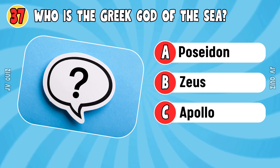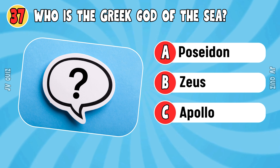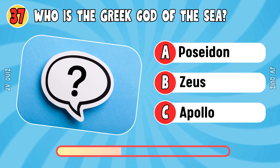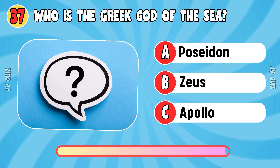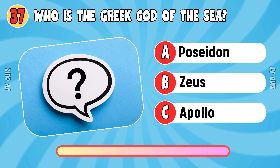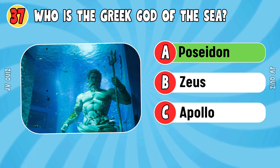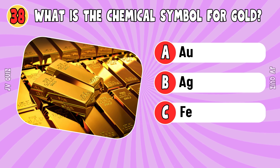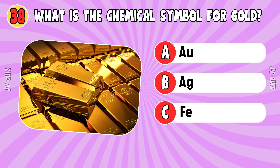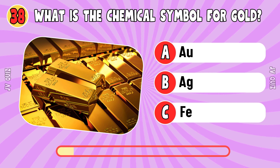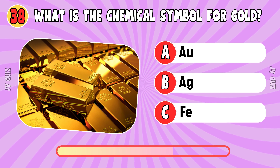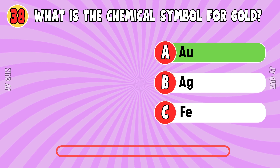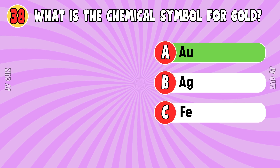Who is the Greek god of the sea? Poseidon. What is the chemical symbol for gold? AU.